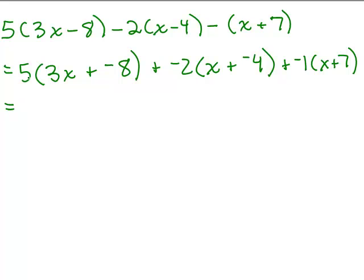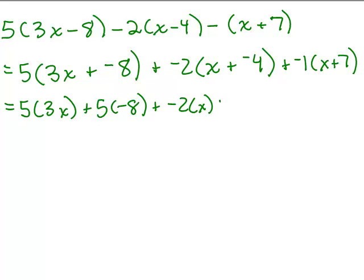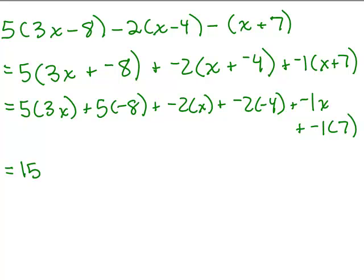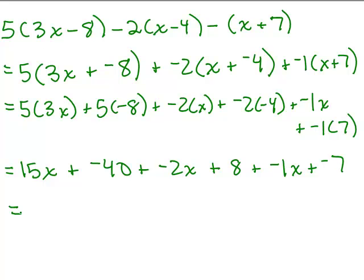Now, when I do the distributive property, I'm going to show all the steps here. This will be 5 times 3x, plus 5 times negative 8, plus negative 2 times x, plus negative 2 times negative 4, plus negative 1 times x, plus negative 1 times 7. And now we could do our multiplications: 5 times 3x is 15x, plus negative 40, plus negative 2x, plus — negative 2 times negative 4 is 8 — plus negative 1x, plus negative 1 times 7 is negative 7. And now you could add your like terms at this point.